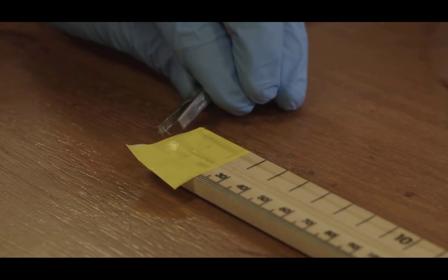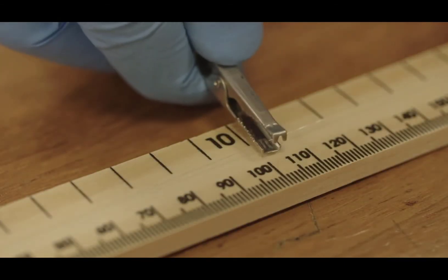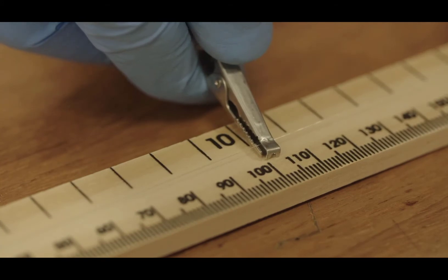One crocodile clip is connected to the wire at the 0cm point of the ruler. The final connection in the circuit is made by attaching the second crocodile clip to the wire at the 10cm mark. By doing this, the wire in the circuit is effectively 10cm long.